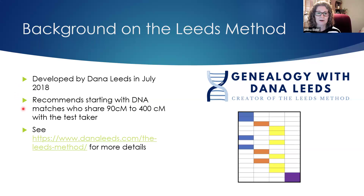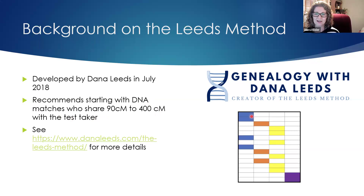She recommends starting with DNA matches who share between 90 and 400 centimorgans. You start with your match — hopefully a second cousin — give them a color, and then everyone who shares DNA with them as a shared match gets the same color. Then you go to your next match not in that group, give them a new color, and all their shared matches get that color, continuing until the data separates into distinct groups.